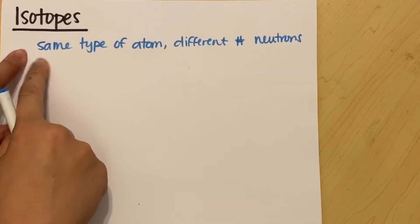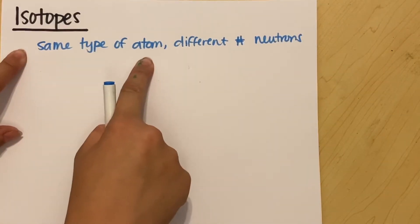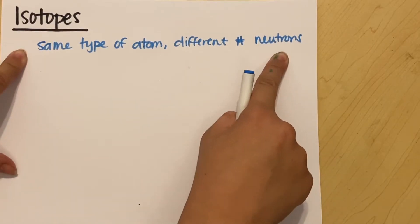In this video, we're going to be looking at isotopes. It's not too complicated. So what an isotope is, is the same type of atom, but it has a different number of neutrons.